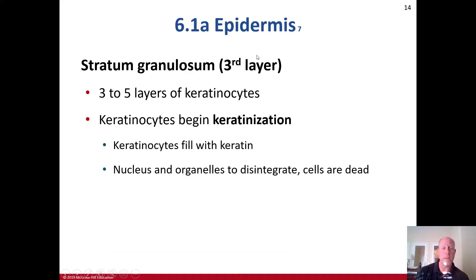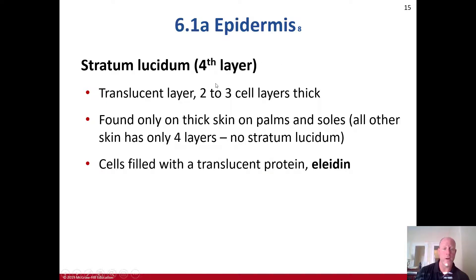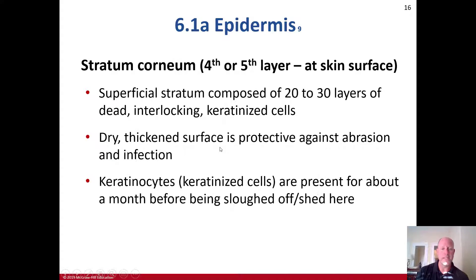The stratum granulosum, the third layer, contains three to five layers of keratinocytes. Keratinization begins here — the keratinocytes fill with keratin, and the nucleus and organelles then disintegrate, so those cells are now dead as they move up into the fourth layer. That fourth layer, the stratum lucidum, only exists in thick skin — on the palms and soles of the feet. It's a translucent layer, two to three cell layers thick, filled with a translucent protein known as eleidin.